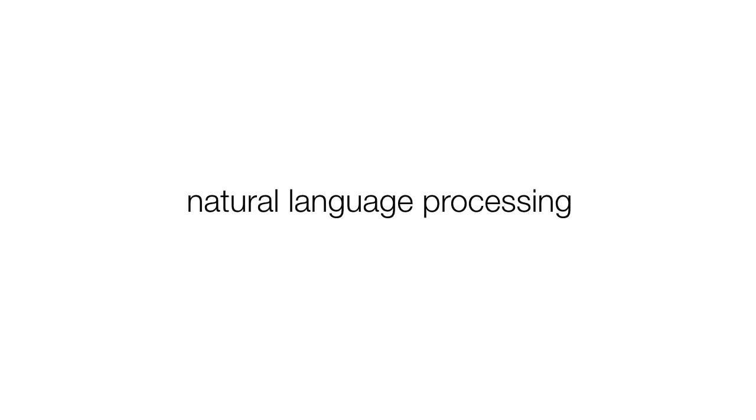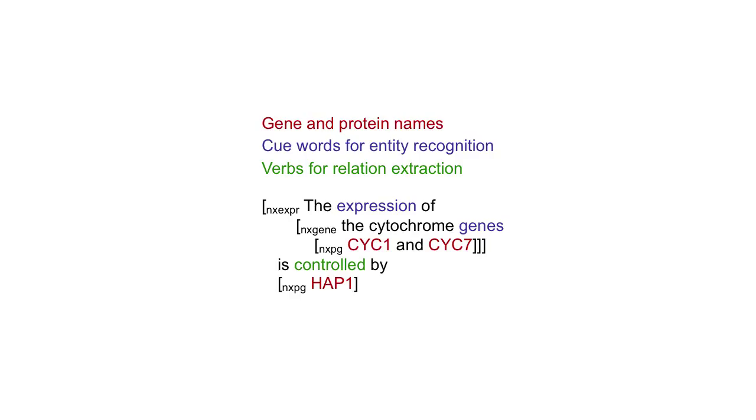Following this, people will typically start working more on natural language processing — actually parsing the sentence structures, or doing part-of-speech tagging, labeling what are verbs and what are nouns. Semantic tagging of various words of interest, syntactic parsing of sentences — that way you can parse a simple sentence like 'the expression of the cytochrome genes SIG1 and SIG7 is controlled by HUB1,' recognize those as gene names, and based on words like 'expression' and 'controlled,' pull out relationships as triples: HUB1 controls the expression of SIG1, HUB1 controls the expression of SIG7.